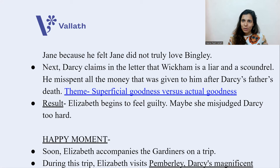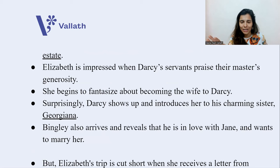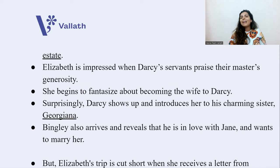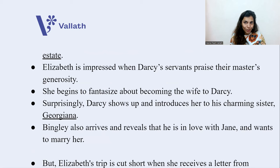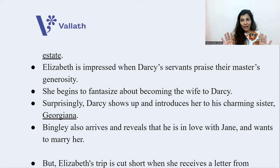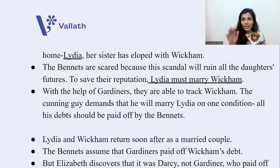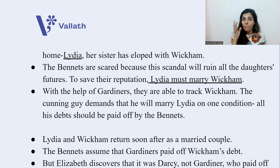Soon Elizabeth accompanies the Gardeners on a trip. During this trip, she visits Darcy's giant, magnificent estate called Pemberley. Elizabeth is impressed when Darcy's servants praise their master's generosity. She looks at the paintings of Darcy and begins to fantasize about becoming his wife. Surprisingly, Darcy shows up and introduces her to his charming sister Georgiana. Bingley also arrives and reveals he is in love with Jane and wants to marry her. But Elizabeth's trip is cut short when she receives a letter from home saying that Lydia has run away and eloped with Wickham. The Bennetts are scared because this scandal can ruin their daughters' futures; to save their reputation, Lydia must marry Wickham.